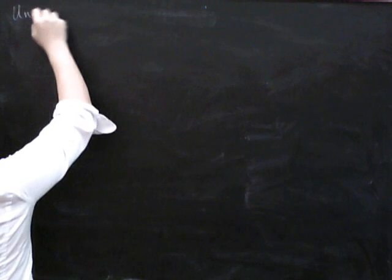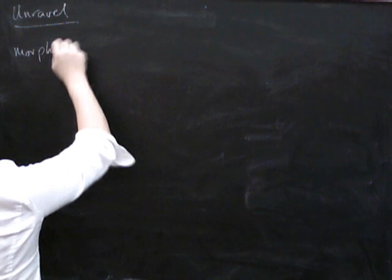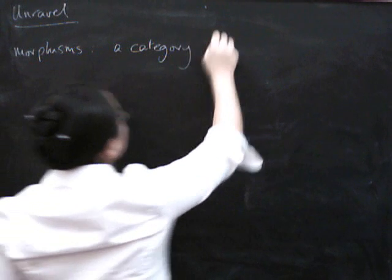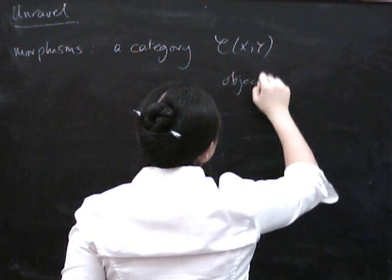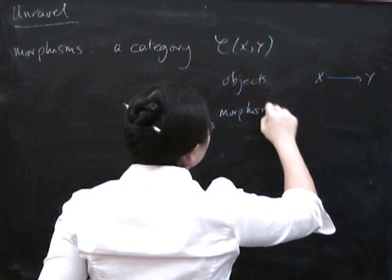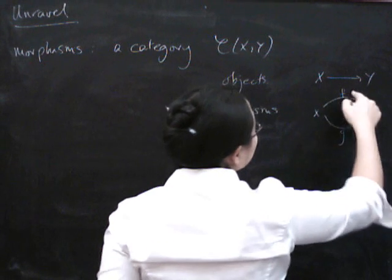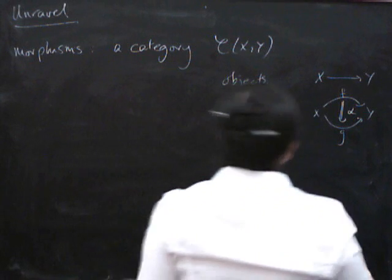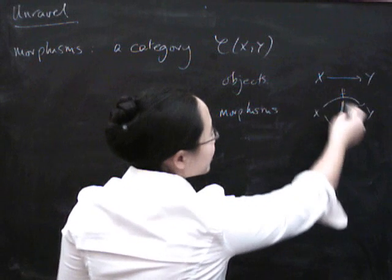Let's unravel a bit. The point is that the morphisms we have form a category, not just a set. So we've got objects in that category, which as before are supposed to be things going from X to Y, but now we've got morphisms in this category as well. Given one morphism from X to Y and another one — these are objects in this category — we can have a morphism in the category, which is what we're going to call a two-cell. This is where we get a little bit higher dimensional, because we've got something that fills in space in between this path and this path.